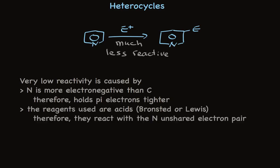And secondly, the reagents that are used for electrophilic aromatic substitution are either Bronsted acids or Lewis acids. In either case, they are drawn to the unshared pair on nitrogen. When they bond or complex with that electron pair, that puts a positive charge on nitrogen. That holds the pi electrons even tighter. As a result, pyridine is a poor reactant for electrophilic aromatic substitution.